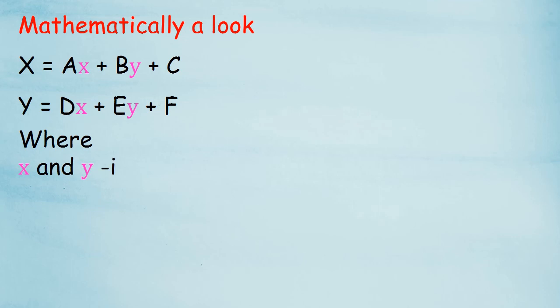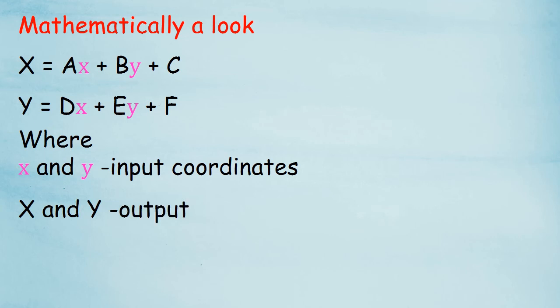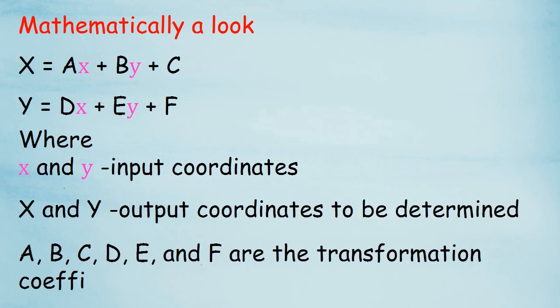Affine transformation mathematically: X is equal to Ax plus By plus C, Y is equal to Dx plus Ey plus F. Where here in pink alphabets, small x and y are the input coordinates, that means what we are given. Capital X and Y are the output coordinates that are to be determined, what we derived from the transformation. Remaining A, B, C, D, E, and F are the transformation coefficients.